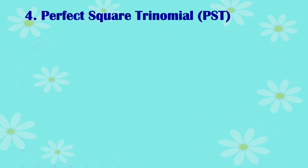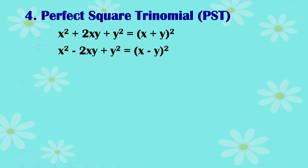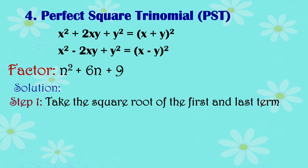Number 4: Perfect Square Trinomial (PST). The patterns are: x squared plus 2xy plus y squared equals the quantity x plus y raised to 2, and x squared minus 2xy plus y squared equals the quantity x minus y raised to 2. When all signs of the trinomial are positive, use the x plus y squared pattern. Let's factor x squared plus 6n plus 9. All signs are positive. Take the square root of the first and last terms — the square root of x squared is n, and the square root of 9 is 3.